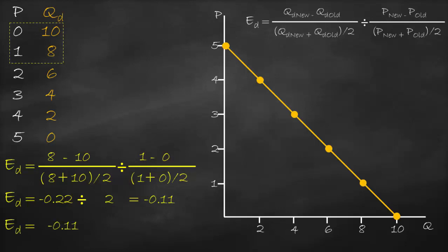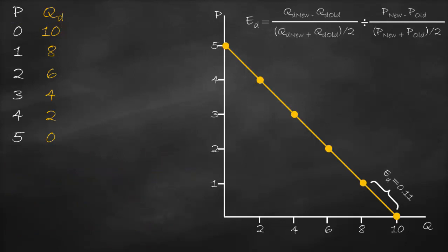Our price elasticity of demand is negative 0.11. We have a negative sign because of the negative relationship between price and quantity demanded based on the law of demand. Using absolute value to remove the negative sign gives us 0.11. Since 0.11 is less than 1, this is inelastic — at a lower price on the graph, demand is inelastic.